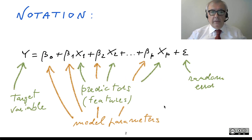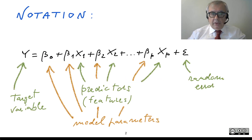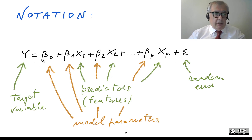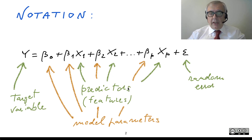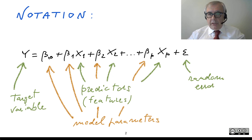So let's start with the notation. The idea is that we have a model where the target variable Y is represented as a linear combination of predictors X1, X2, and XP, also called features, and the relationship is linear through some parameters.